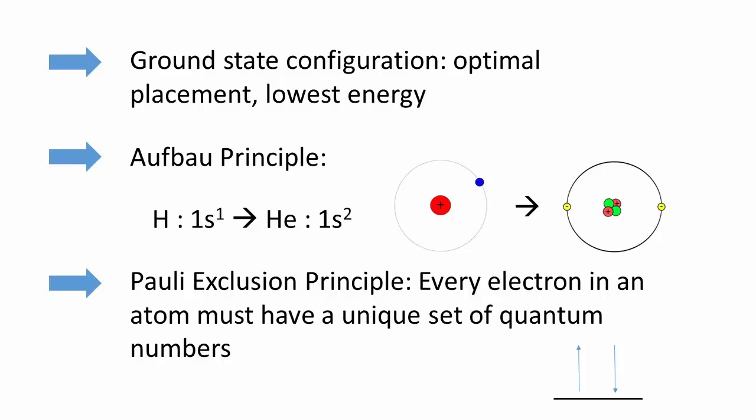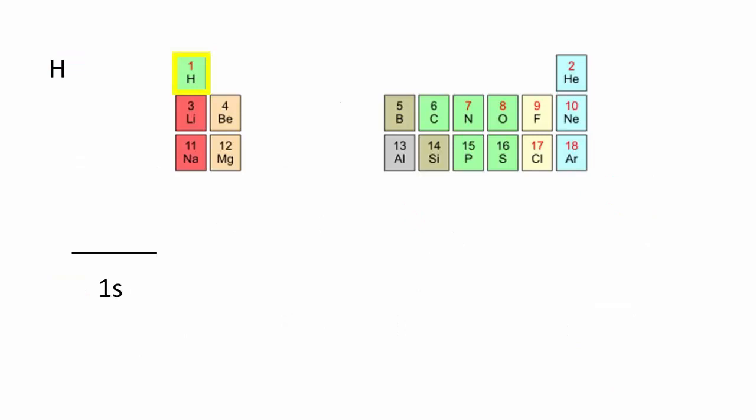We now proceed to define the ground state electronic configurations of the atoms. For the hydrogen atom, we place a spin up electron in the 1s orbital. For helium, we build upon this and place another electron in the 1s orbital, but it must be spin down.